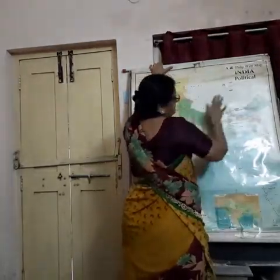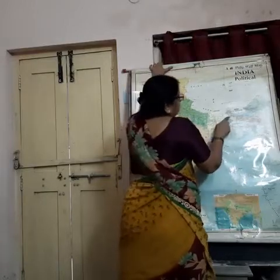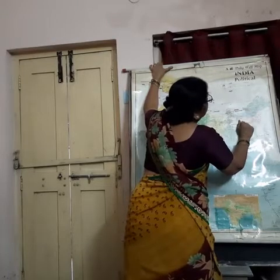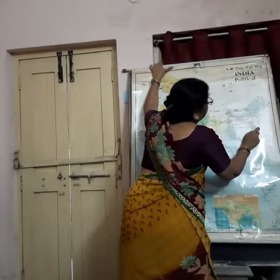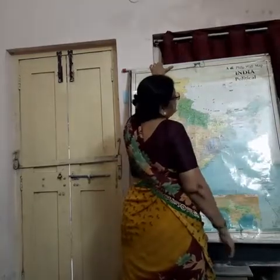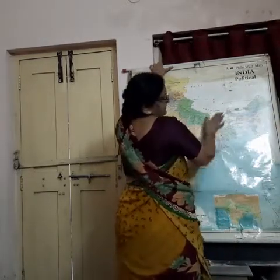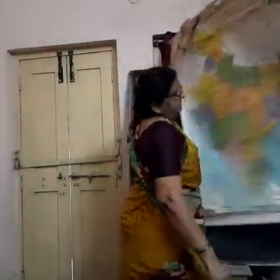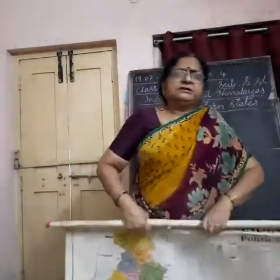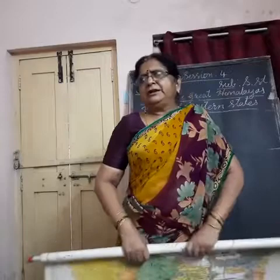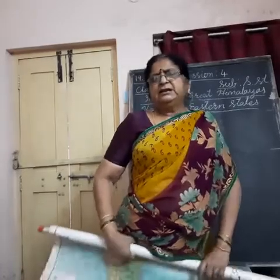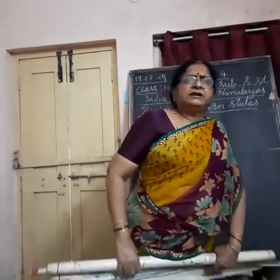All these states together we call them seven sisters — very small states, all of them. Arunachal Pradesh, Assam, Nagaland, Manipur, Mizoram, Tripura, and Sikkim. These all are very small states in the northeastern part of India. They are located in the Himalayan region and they come under the Himalayan region. Today we are going to study about them one by one.